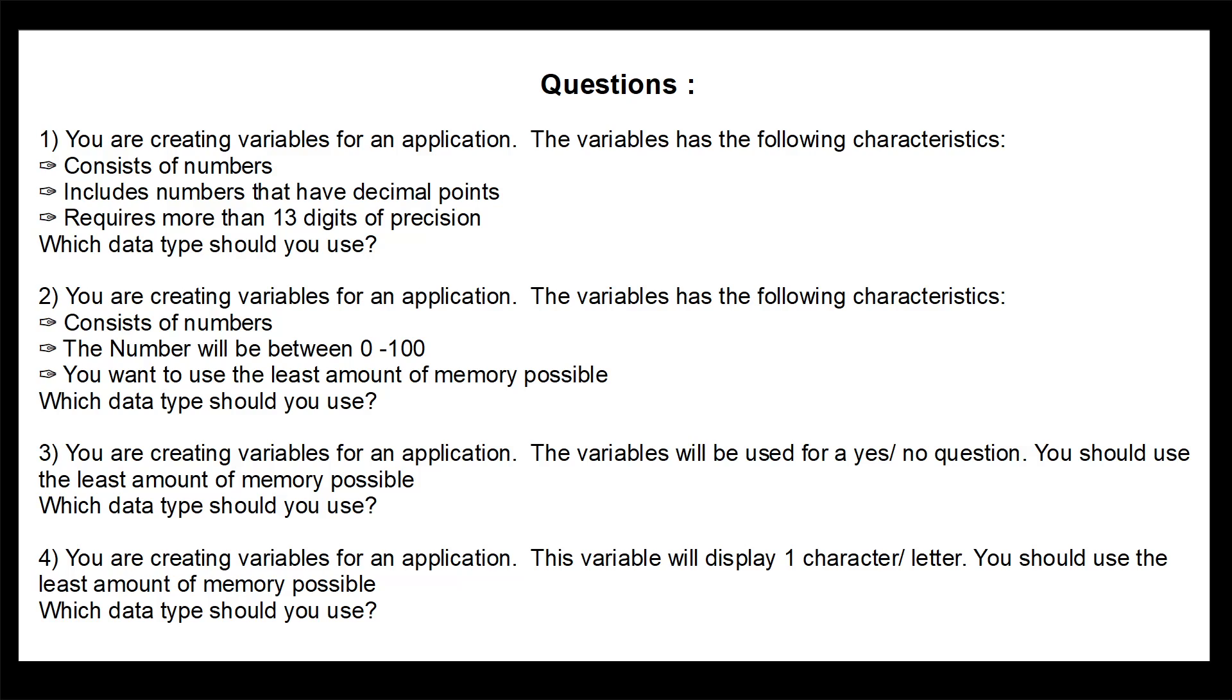Hopefully you've paused the video. Now let's look at some of the answers. The first question is trying to find the most suitable data type. Because it's numbers, we're going to use a primitive data type. Because it's decimal place or a decimal point number we should not be using an int or a long. We have to use a float or a double.